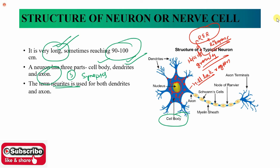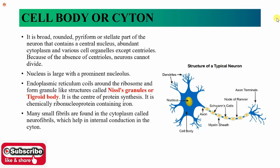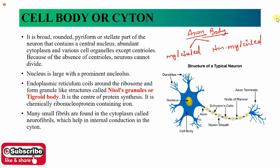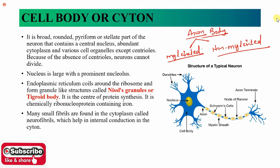Now we will talk about this specific covering. These axons are divided into two types — we can divide the axonal body as either myelinated or non-myelinated. What does myelinated or non-myelinated mean? It involves a specific type of cell which we call a Schwann cell. These Schwann cells are one type of supporting cell present in the axon region.